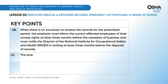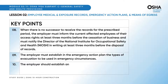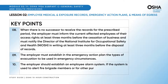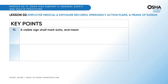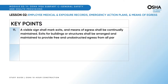The employer must establish in the emergency action plan the types of evacuation to be used in emergency circumstances. The employer should establish an employee alarm system; if the system is used to alert fire brigade members or for other purposes, a distinctive signal for each purpose shall be used. A visible sign shall mark exits, and means of egress shall be continually maintained. Exits for buildings or structures shall be arranged and maintained to provide free and unobstructed egress from all parts of the building or structure when occupied.